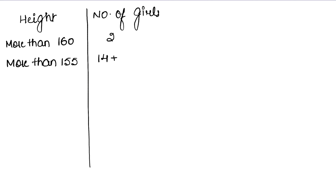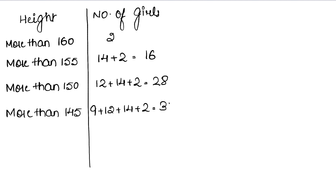More than 145: how many girls are there? We add 9 plus 12 plus 14 plus 2. We already have 28, so adding 9 gives us 37.